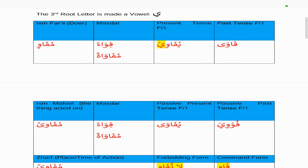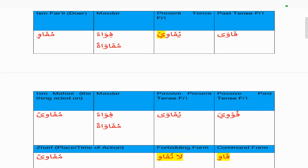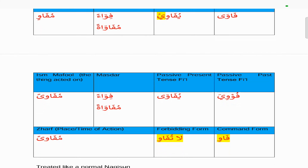The passive past tense is 'fu'wiya', the ya returns which is normal for Nakis. The passive present tense is 'yufa wa' with all the harakat at the top and alif maqsoora at the end. The isma maf'ul is 'mufa wan' — to switch from the passive present to isma maf'ul, just change the ya to a meem and make it heavy because isma maf'ul is an ism. The command form is 'fa wi': from present tense 'tufa wi', take the anta version, make it lightest by dropping the ya with the sukun, leaving 'tufa wi', then drop the ta. Because the new first letter fa has a harakat other than sukun, we don't need to add extra letters — so 'fa wi'. The forbidding form is 'la tufa wi', and the zarf is the same as the isma maf'ul: 'mufa wan'.